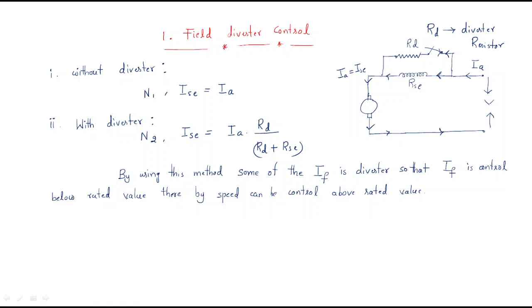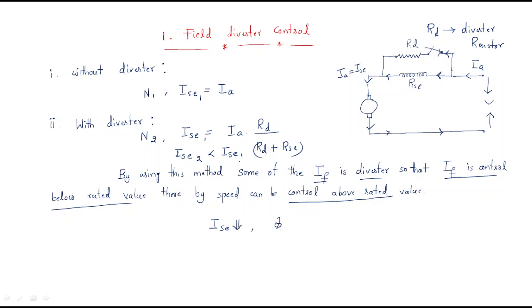When the switch is on, current will flow from two paths. Observing the two currents, in the second case the series field current will be less than the armature current. Automatically, some of the field is diverted, so the field current is controlled below rated value, and thereby speed can be controlled above rated value. In the second case, series current decreases, and when field decreases, speed increases above rated value.